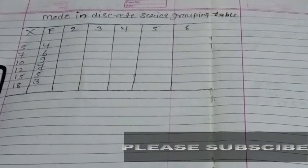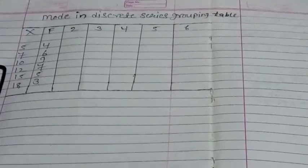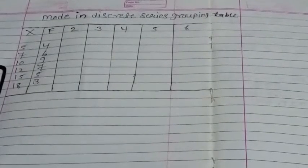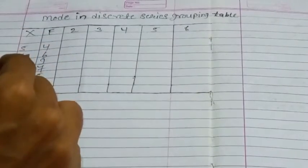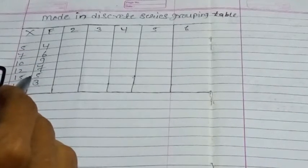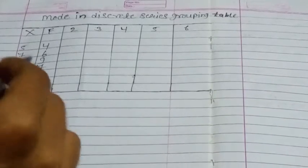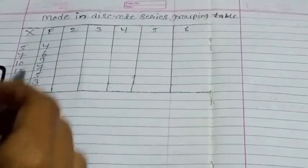Today we are going to learn mode in discrete series with the help of a grouping table. For making a grouping table, we have to make 6 columns. The x values and frequency will be given in your question, and this frequency is known as column 1.